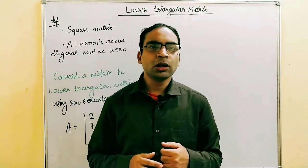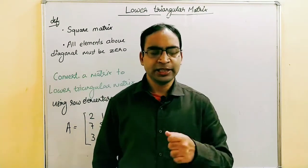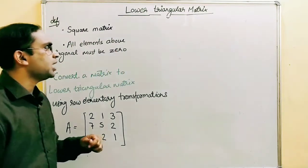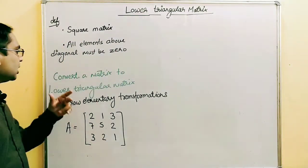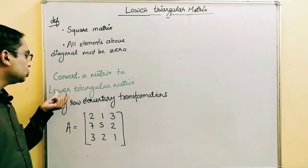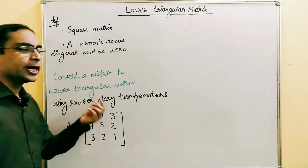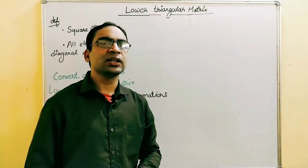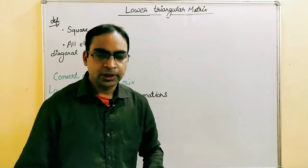In this lesson, we will talk about lower triangular matrix. Let's see what we're going to discuss — we'll cover the definition and see how we can convert a matrix to lower triangular matrix using row elementary transformation. In the previous lesson, we had talked about upper triangular matrix.